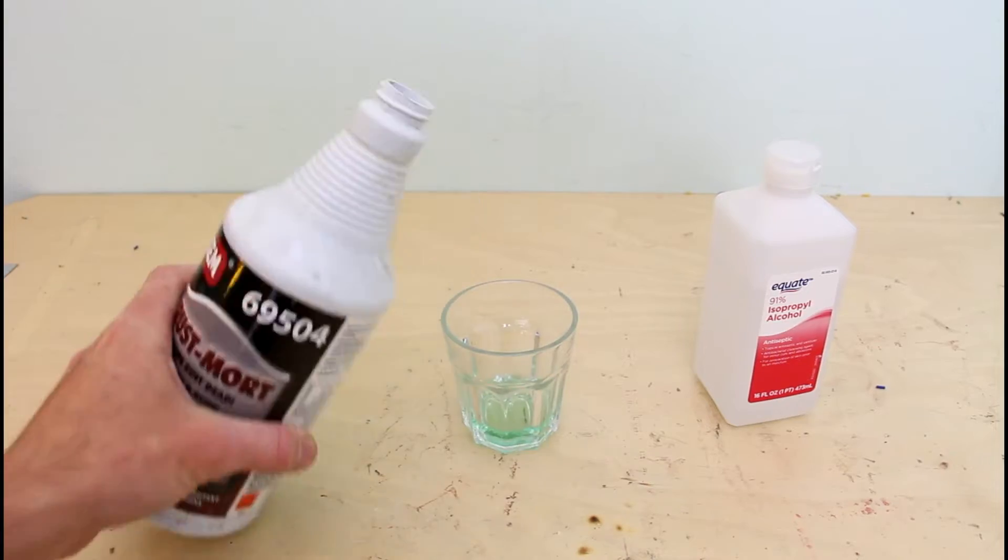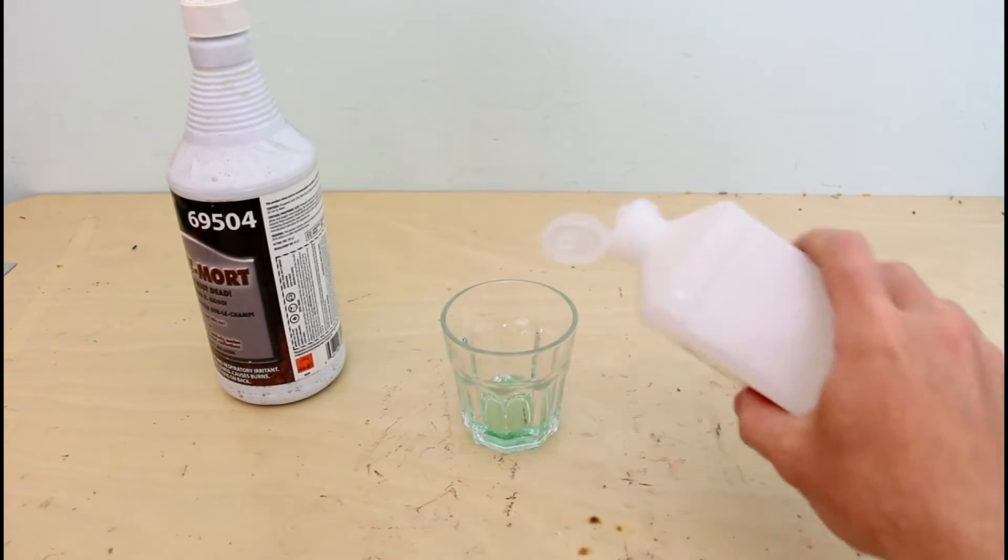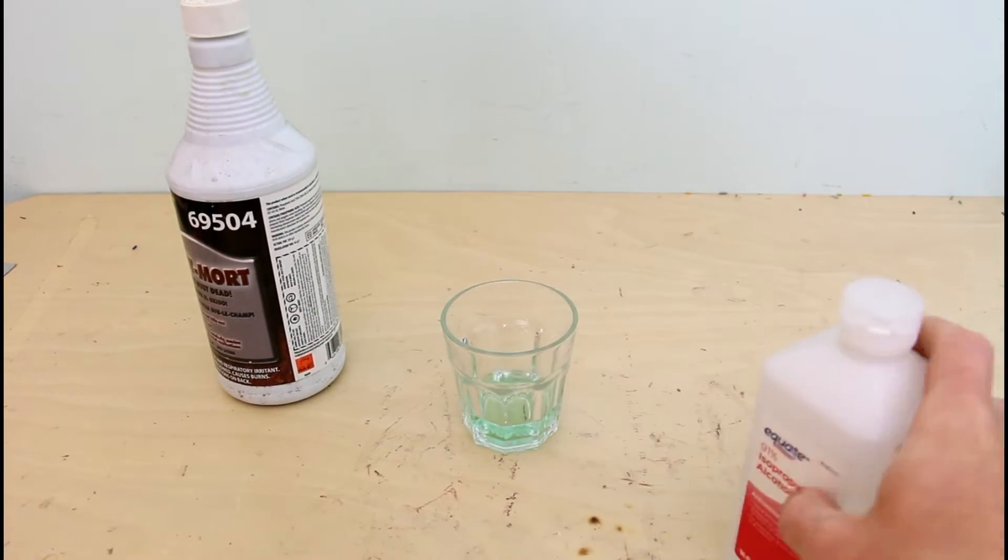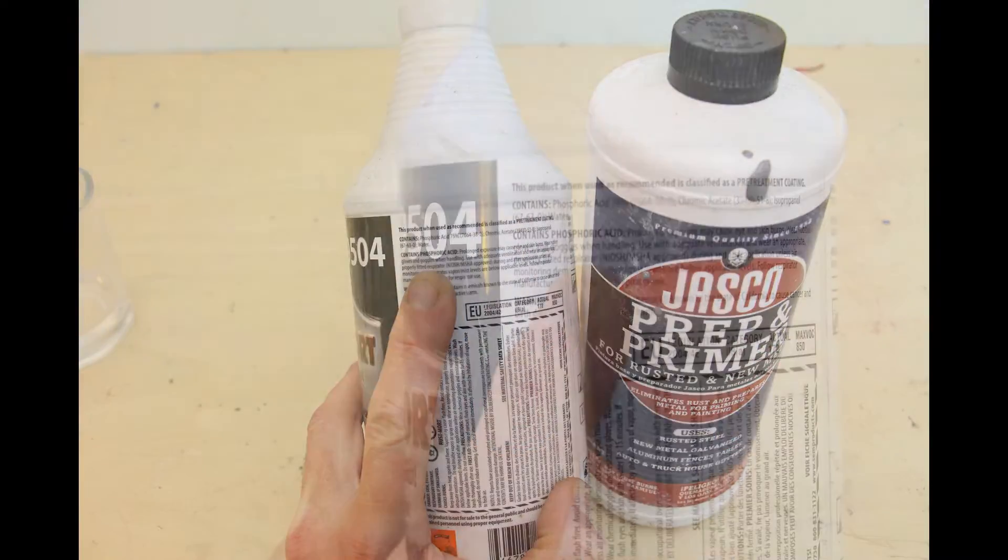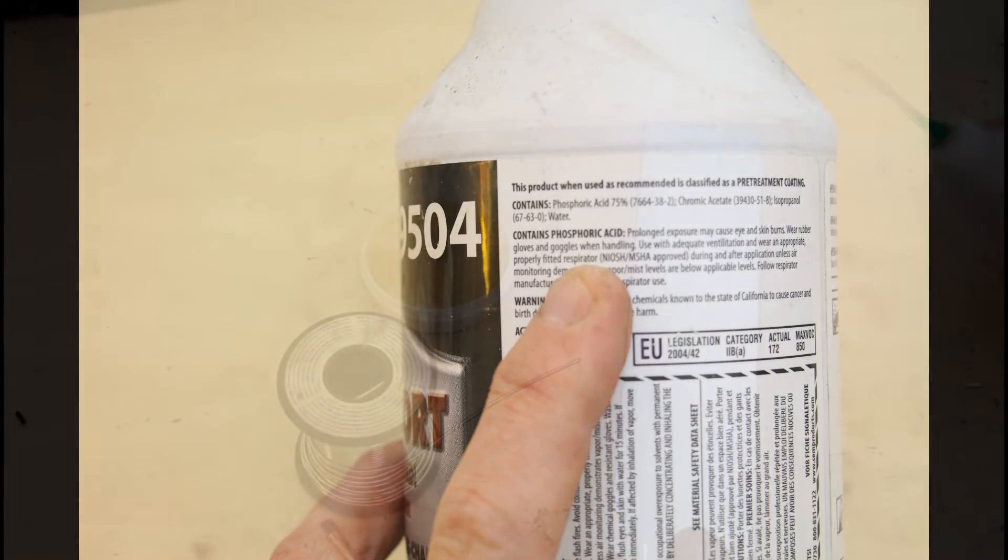Speed Flux is nothing more than rust converter and isopropyl alcohol mixed in a 50-50 mixture. There are many different brands of rust converter. You'll want to choose one that uses phosphoric acid as the active ingredient.